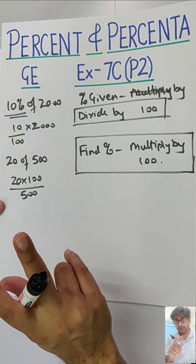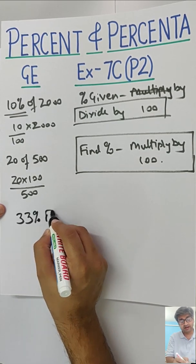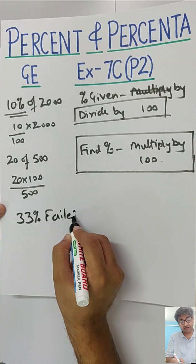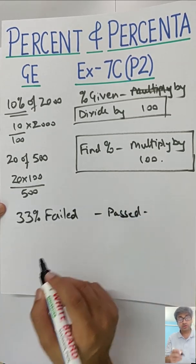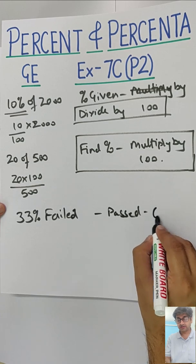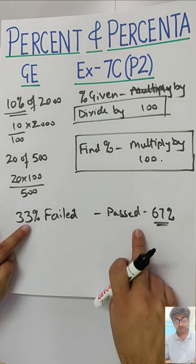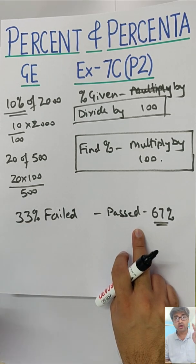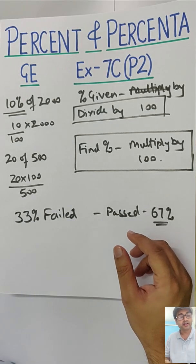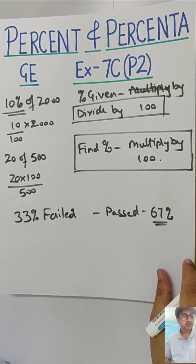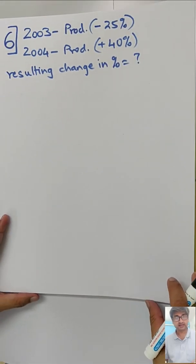Last thing, complementary events, for example pass and fail. If they say 33% failed, can you tell me how many percent passed? 100 minus 33, that should be 67%, only when there are complementary events. Always see what is the base and accordingly divide it to get your final answer. Let's get into sum number 6.